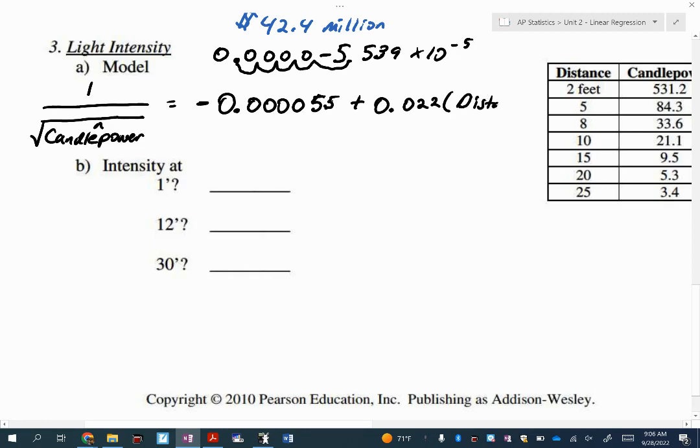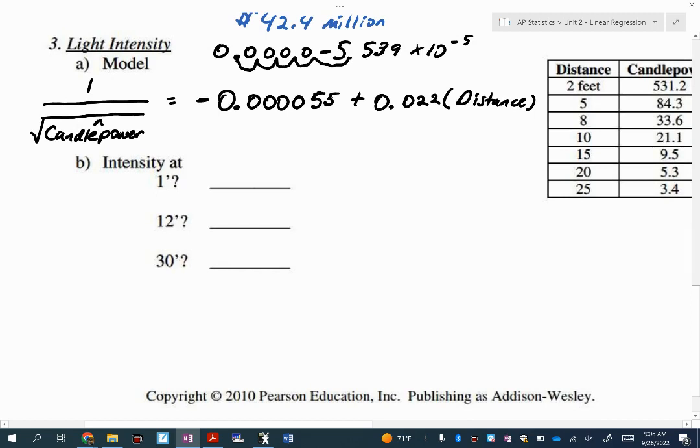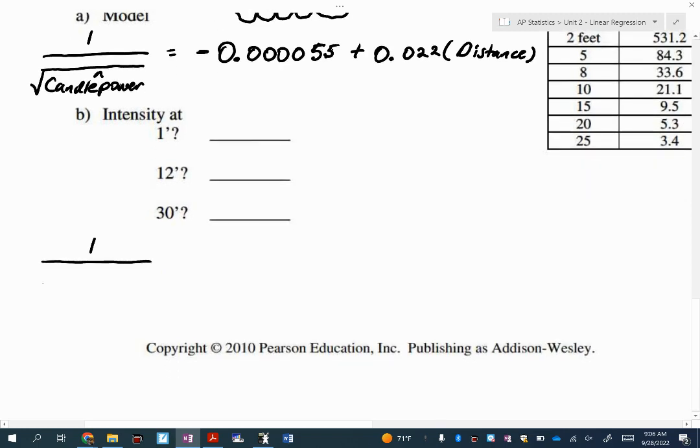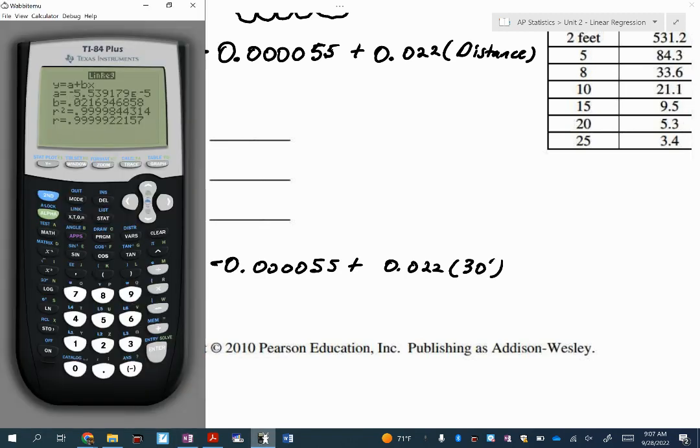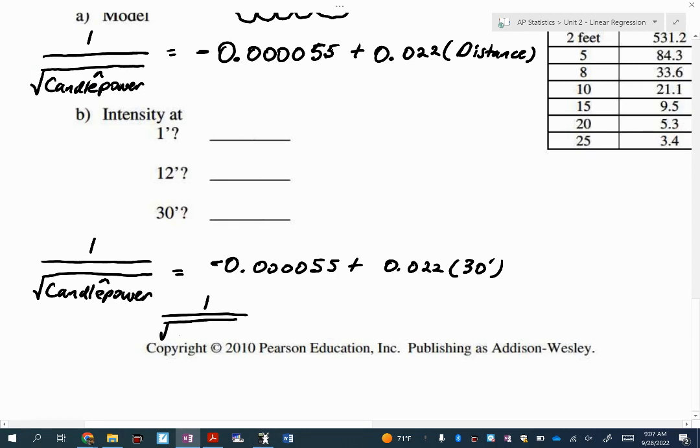Let's predict the one that is at 30 feet. I'll do this last one and then I'll do the 12 feet quicker. To do the 30 foot, it's one over the square root of candle power hat equals -0.000055 plus 0.022 times 30 feet. So I'm going to do y, vars, y vars, function y sub one is where I put it, and I want to evaluate this at 30 feet. Keep in mind, when it spits this out, this is not the answer. This is equal to one over the square root of the answer.